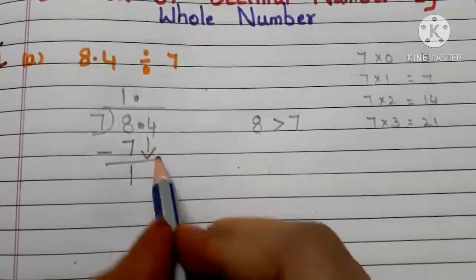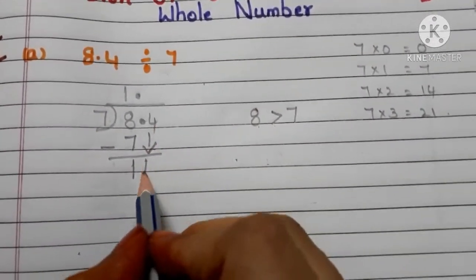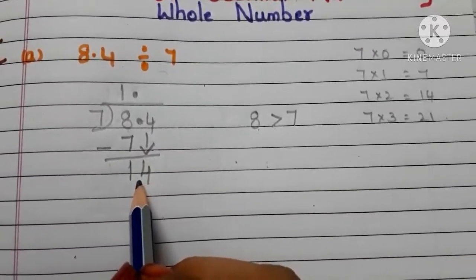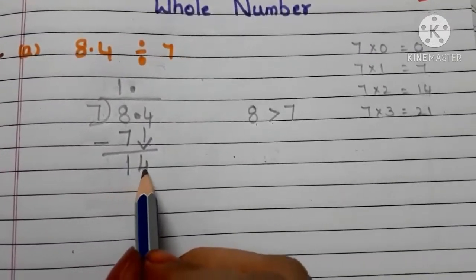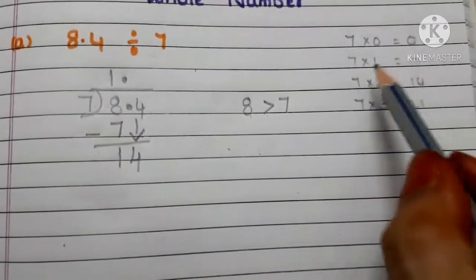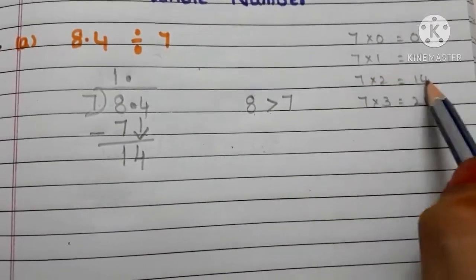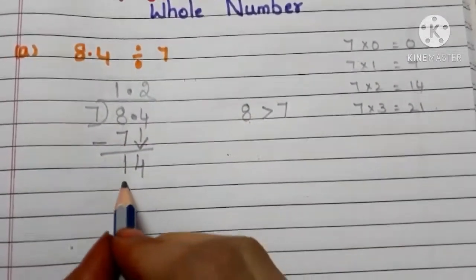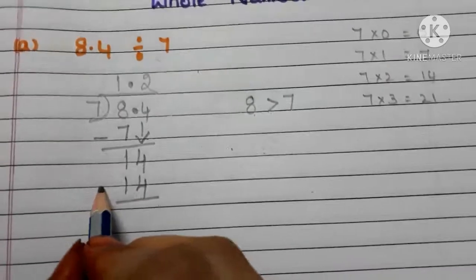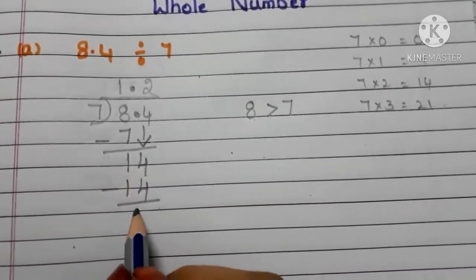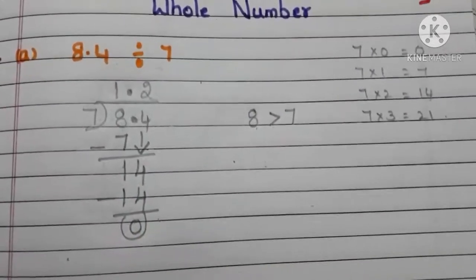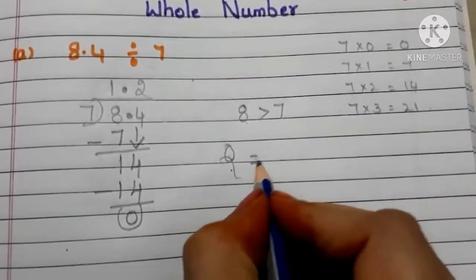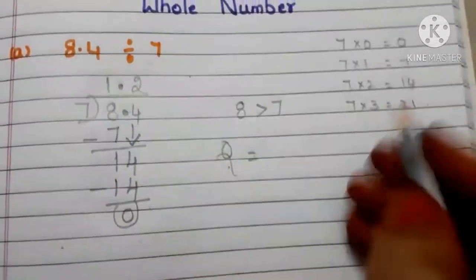Now we bring down the number 4. Here we do not need to write the decimal point again. Now we have 14. Seven 2s are 14, so write 2 in the quotient and 14 below. 14 minus 14 is 0. The quotient is 1.2.